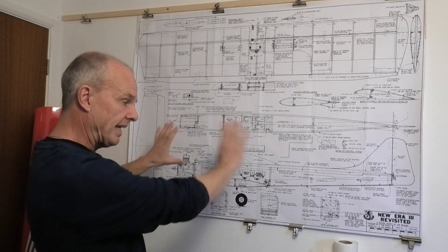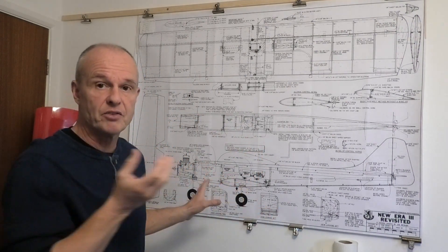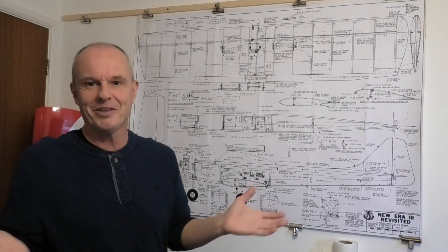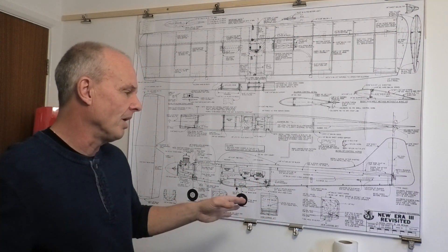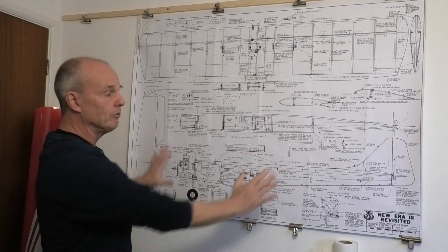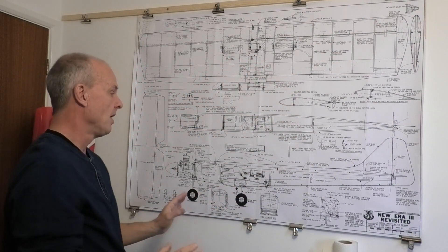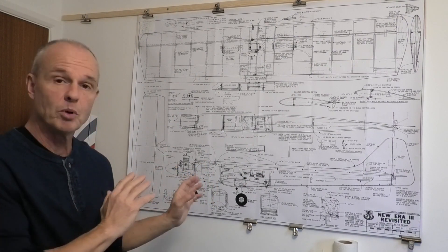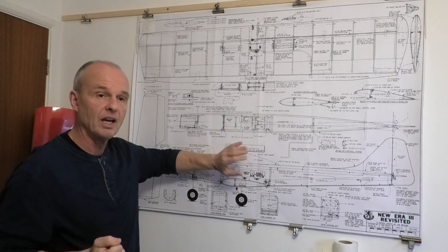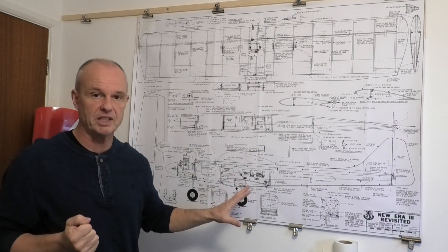Now this latest design, I say latest, is from 1996, so still 25 years old, and that was done by Joe Bashir. This is a really good set of plans and it's available to download from the Outerzone website along with the original article that was published in the magazine.